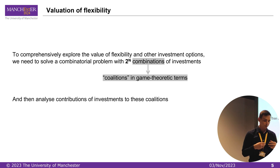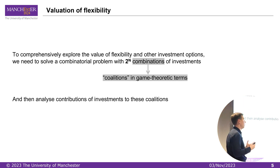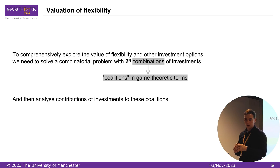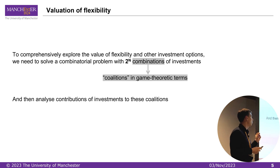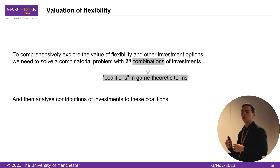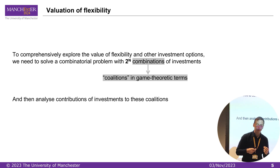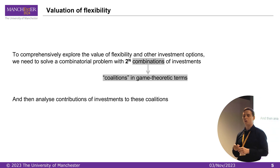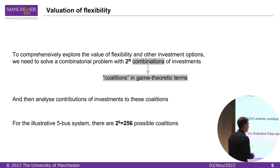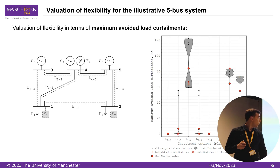To thoroughly analyze the usefulness and contributions of different investment options, we need to solve a challenging combinatorial problem with two-to-the-power-of-N combinations of investments. In this work we use a cooperative game theory framework. These combinations are called coalitions in the literature. We analyze multiple coalitions, estimate contributions of investment options to those coalitions, and judge on the usefulness of different investments. Our tool iteratively solves the planning problem for different coalitions. For the five-bus system we have eight investment options, giving 256 possible coalitions.